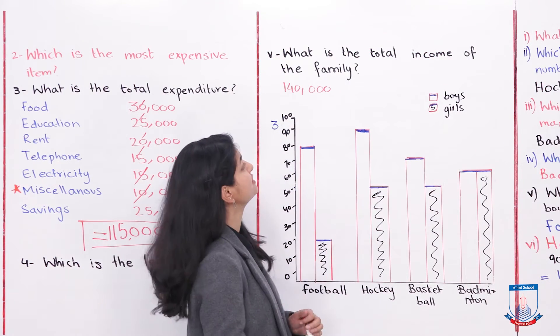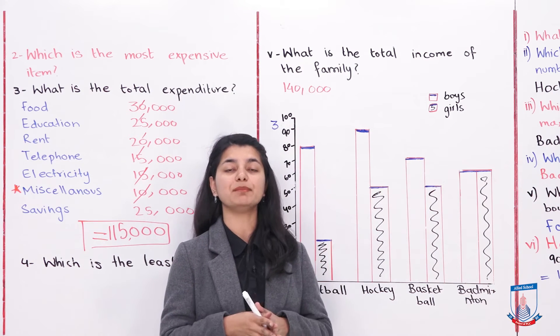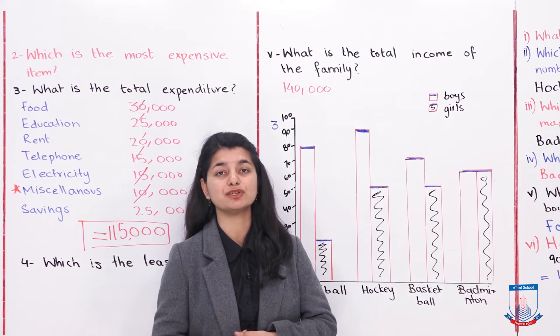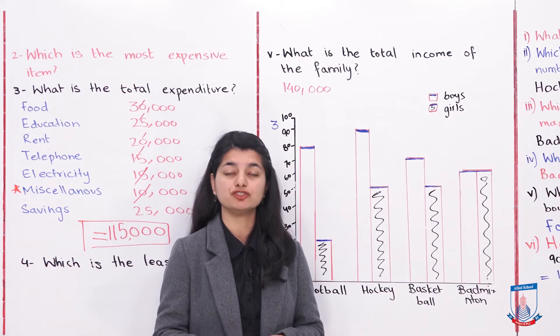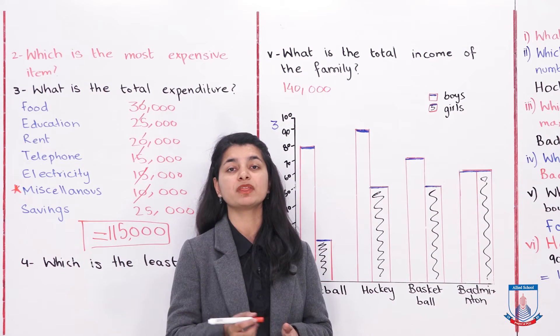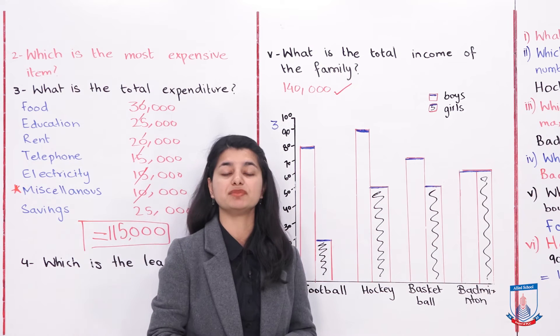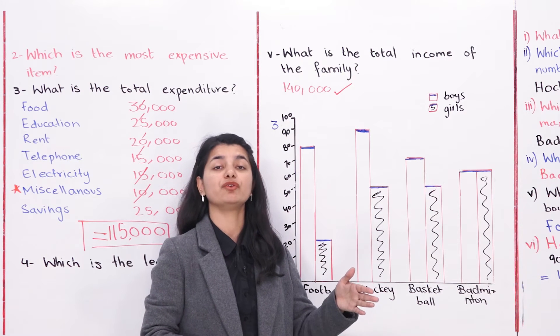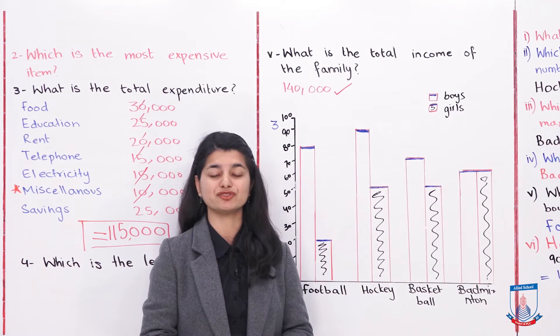Now they are asking you: what is the total income of the family? For the total income, all the amounts you have given, you have the total expenditure of 115,000. In the same way, the savings which have been saved, add it. The total will be 140,000, and this was their total income. In this case, they have earned 115,000 and the rest of the 25,000 have saved.